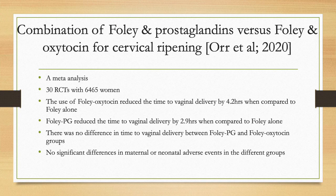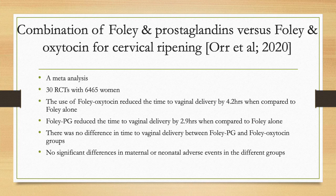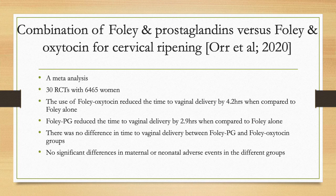Ordered et al. looked at combination of Foley catheter and prostaglandin versus Foley catheter and oxytocin for cervical ripening in a meta-analysis of 30 randomised control trials with 6,465 women. They found that Foley catheter and oxytocin combination reduced time to vaginal delivery by 4.2 hours compared to Foley alone, and Foley and prostaglandin combination reduced it by 2.9 hours compared to Foley alone. However, when comparing Foley with oxytocin versus Foley with prostaglandin, there was no significant difference in time to vaginal delivery, nor in maternal or neonatal adverse events.